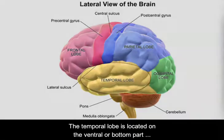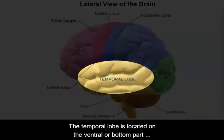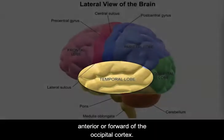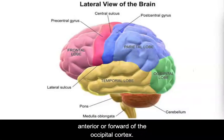The temporal lobe is located on the ventral or bottom part of the cerebral cortex, anterior or forward of the occipital cortex.